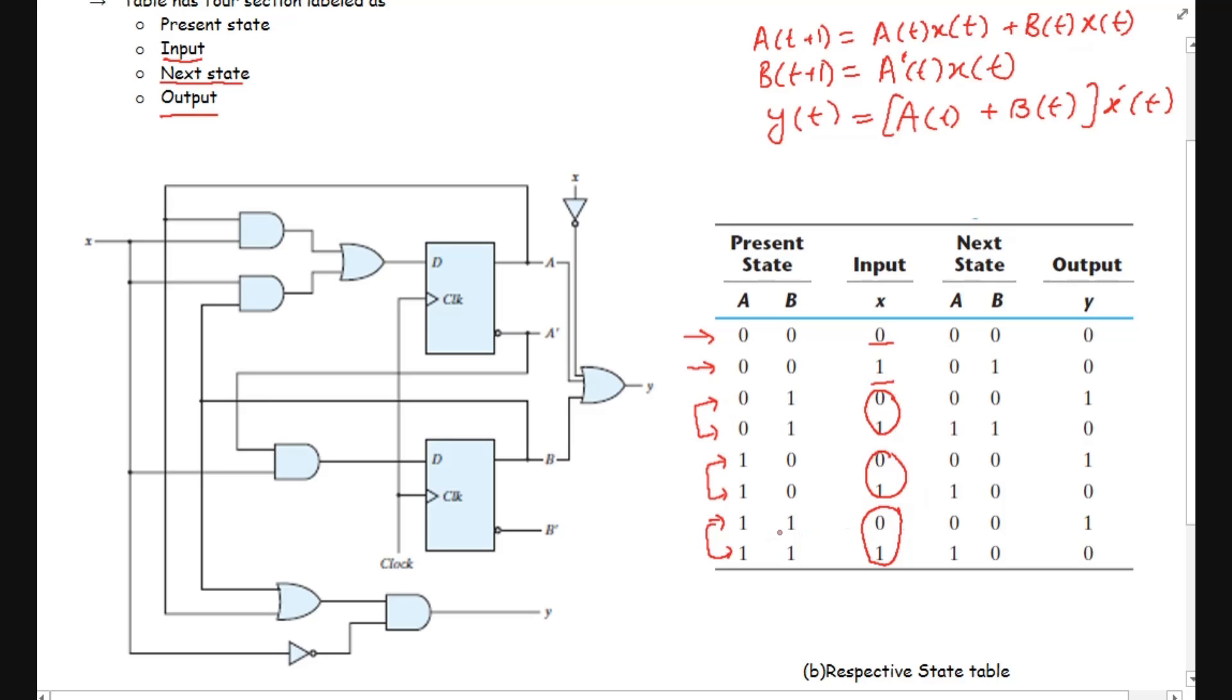And with this we will put all these values in these equations and after that we can get the next states which is given by these values. And finally, we can put these values in this equation and we can find the output of this state table.